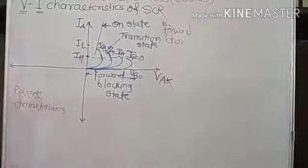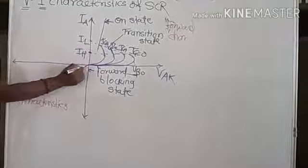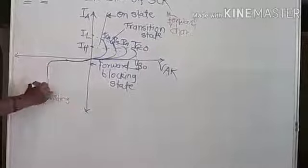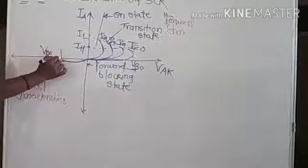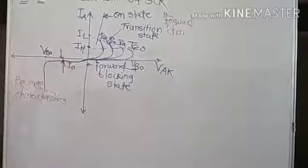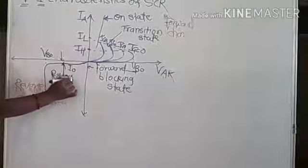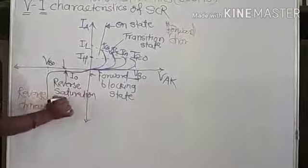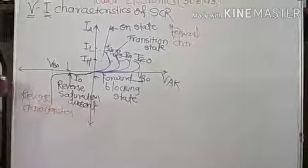In reverse characteristics of the SCR, they are the same as that of the diode. In reverse characteristics, a very small amount of current flows, called I0, also called reverse saturation current, and also called leakage current. Reverse saturation current is also called leakage current, which flows in a very small amount.